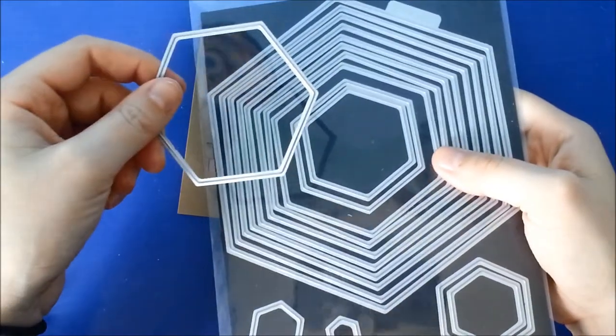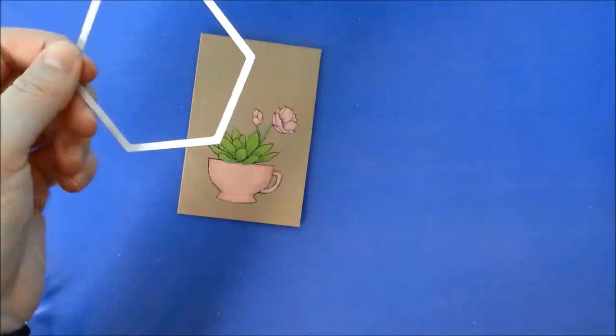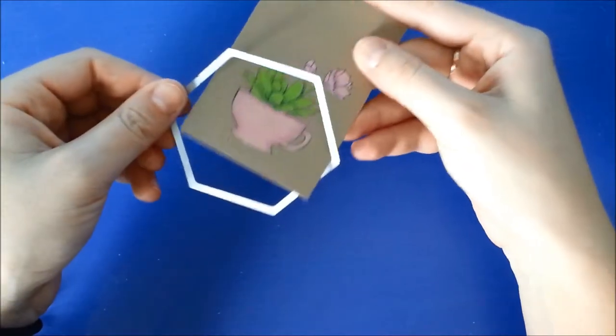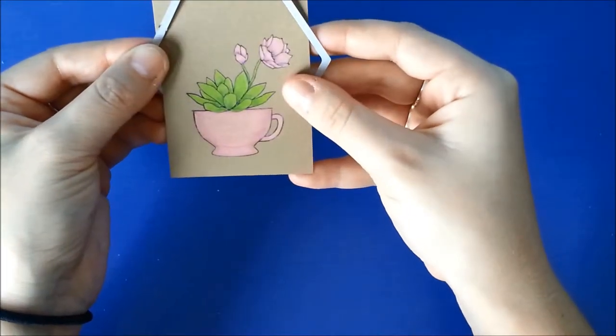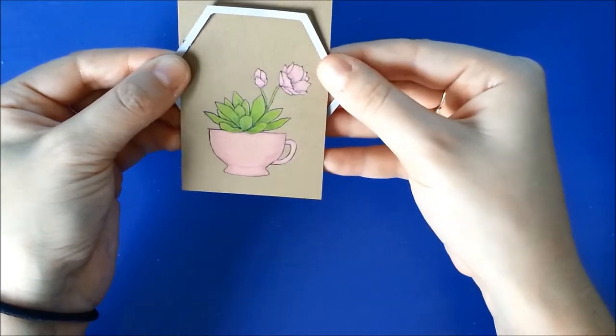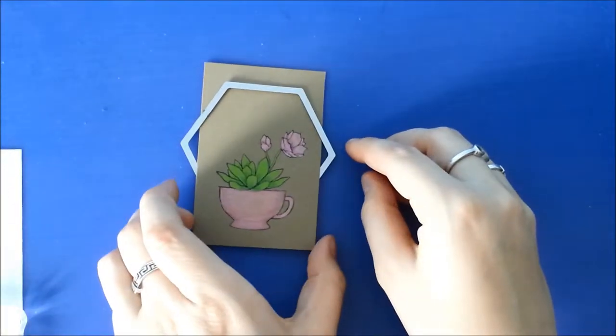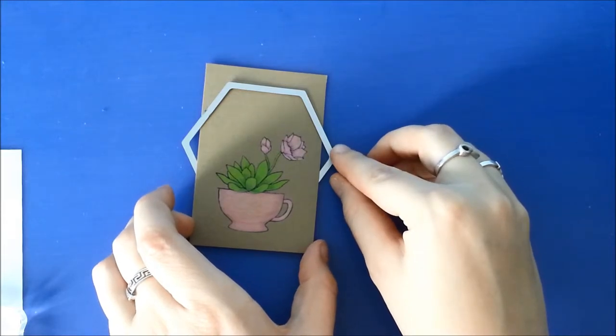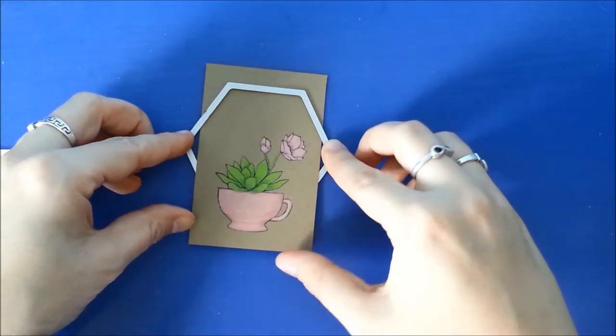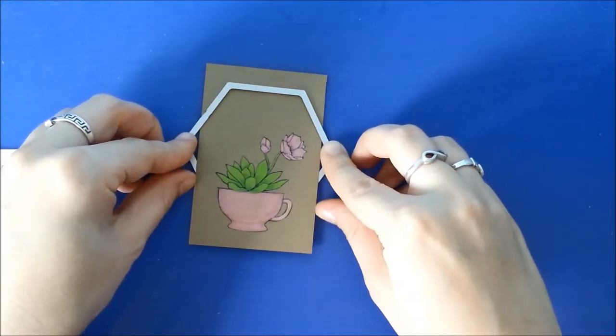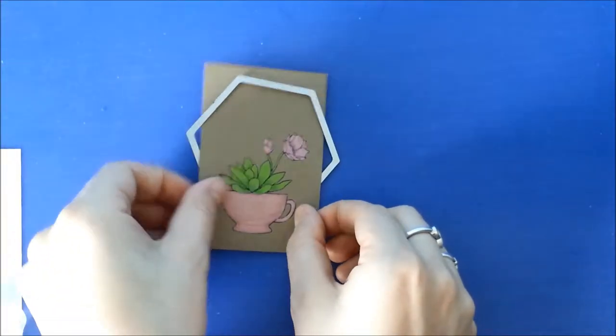Now we're going to take a hexagon die. These ones are from We Are Memory Keeper, so we're going to use this to get our tag shape. We're going to place this just so that the cutting blade is on the top section. I'm going to try to get this in here both even and straight. This is pretty much the hardest part to try to get this all lined up how you want it.